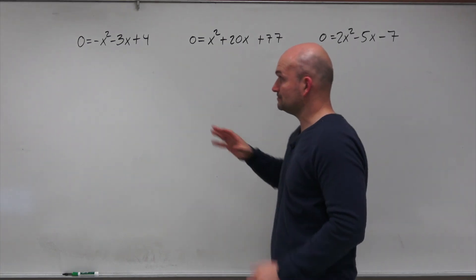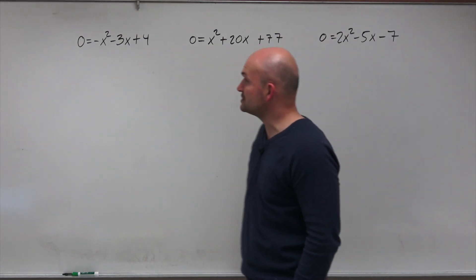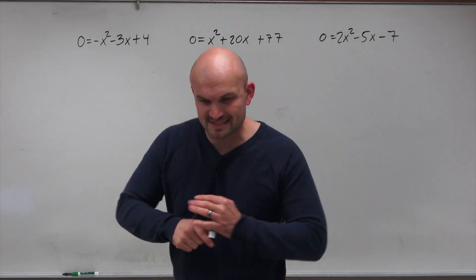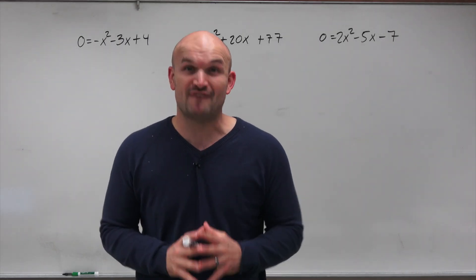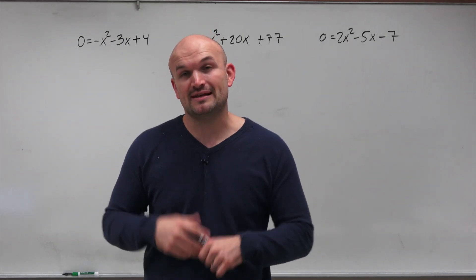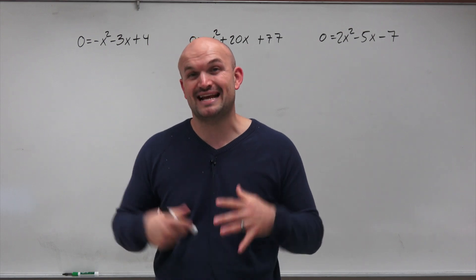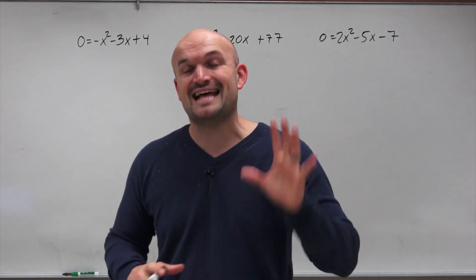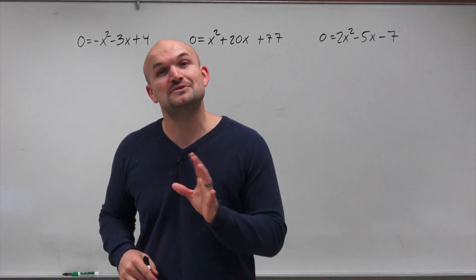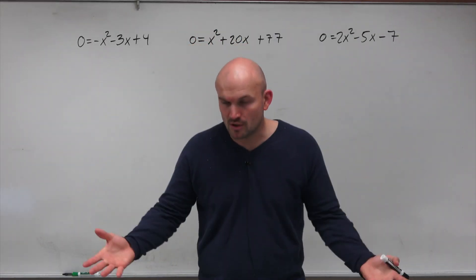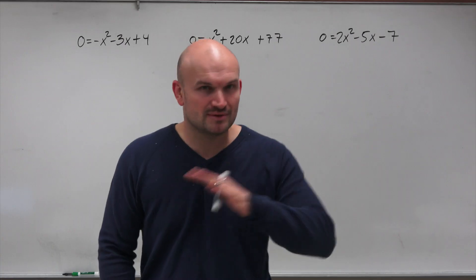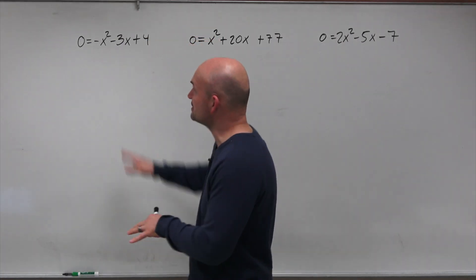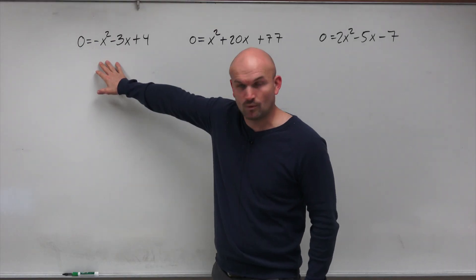On this first example, you can see I have a coefficient of negative x squared minus 3x plus 4. I like to use factoring whenever possible. If you have a quadratic that is factorable, that is going to be the fastest as well as the easiest way to solve a quadratic equation. The problem is a lot of students do not like factoring — they want to avoid it, especially when a is not equal to 1.